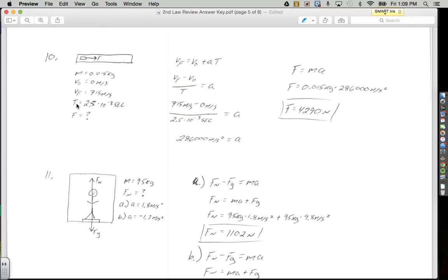Since we have V0, VF, and T, and we're trying to solve for A, we're going to pick the equation without D in it, which is VF equals V0 plus AT. A little bit of algebra to solve for A, we just subtract V0 to the other side, which is why we have VF minus V0, divide by the time to get A all by itself, and now we can plug in our numbers. 715 meters per second minus 0 meters per second, and we're going to divide that by the time, which is 2.5 times 10 to the negative third seconds. Plug that into our calculator, and we get a very large acceleration of 286,000 meters per second squared, but it kind of makes sense that it's large since we're talking about a bullet in a gun.